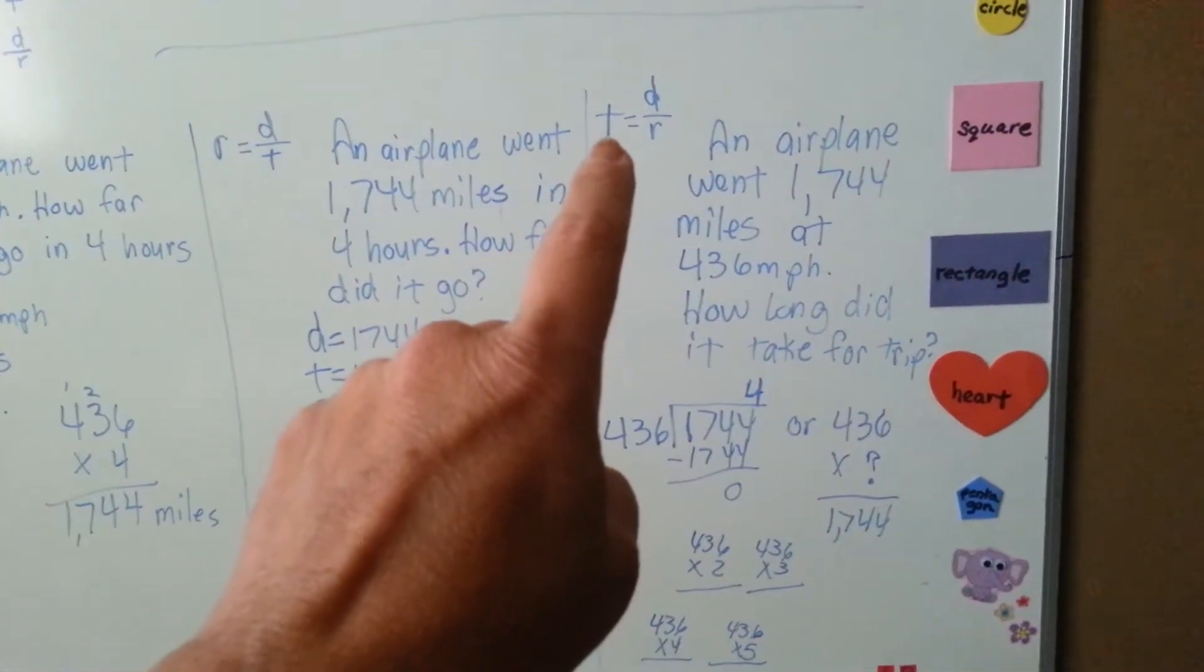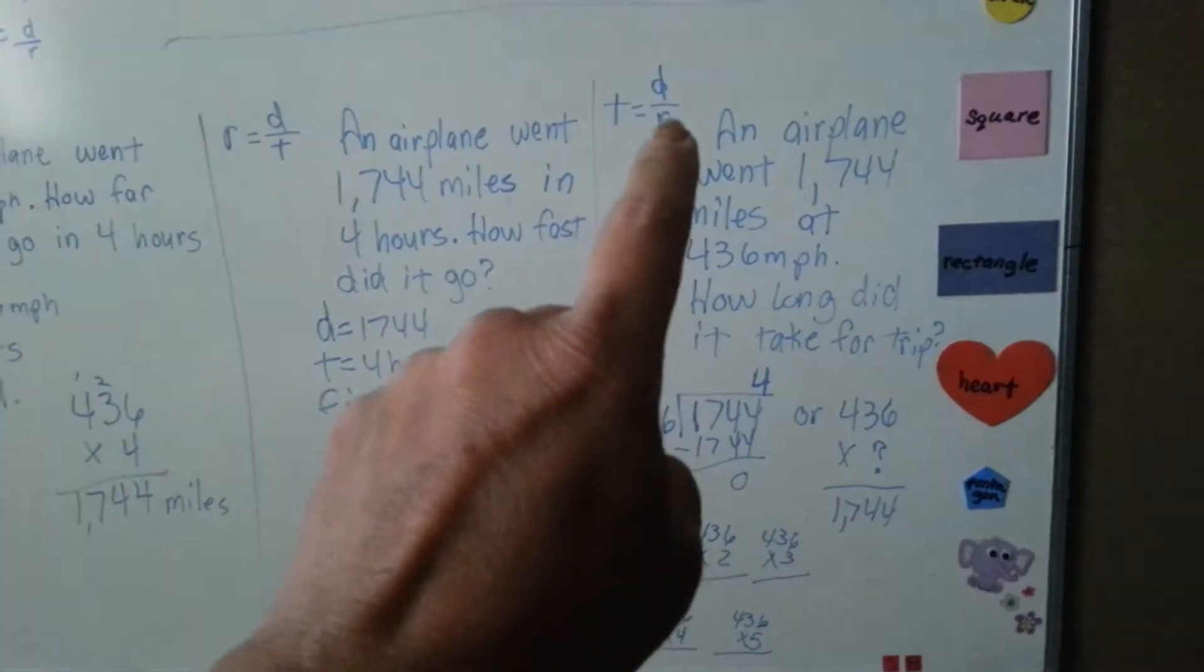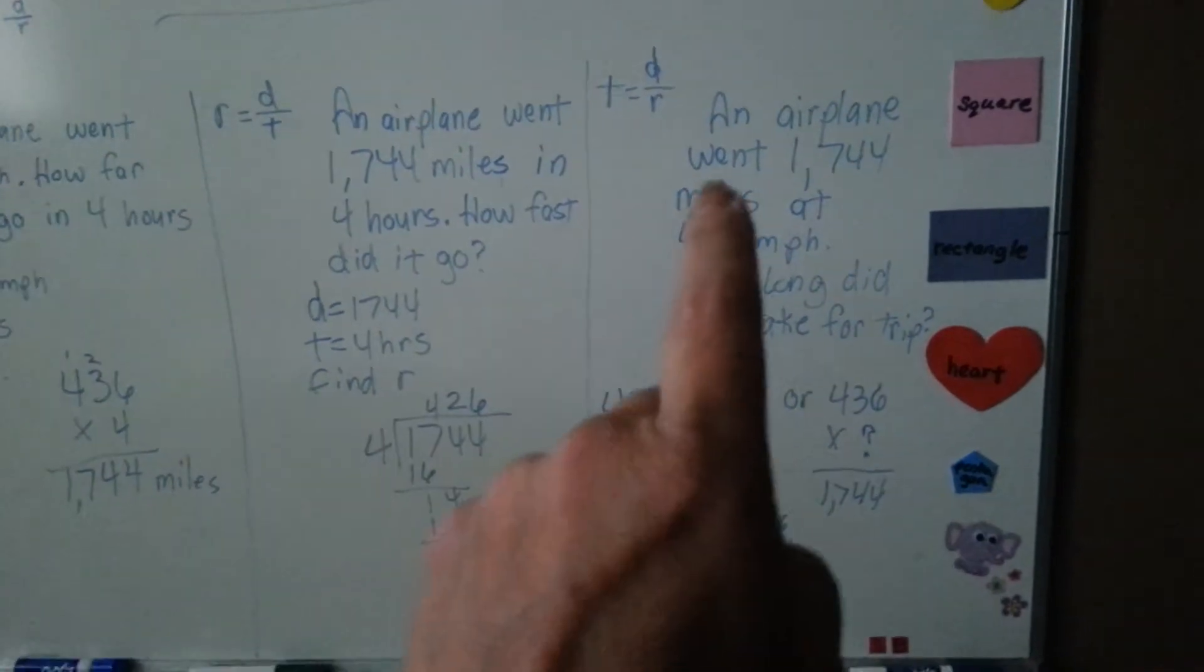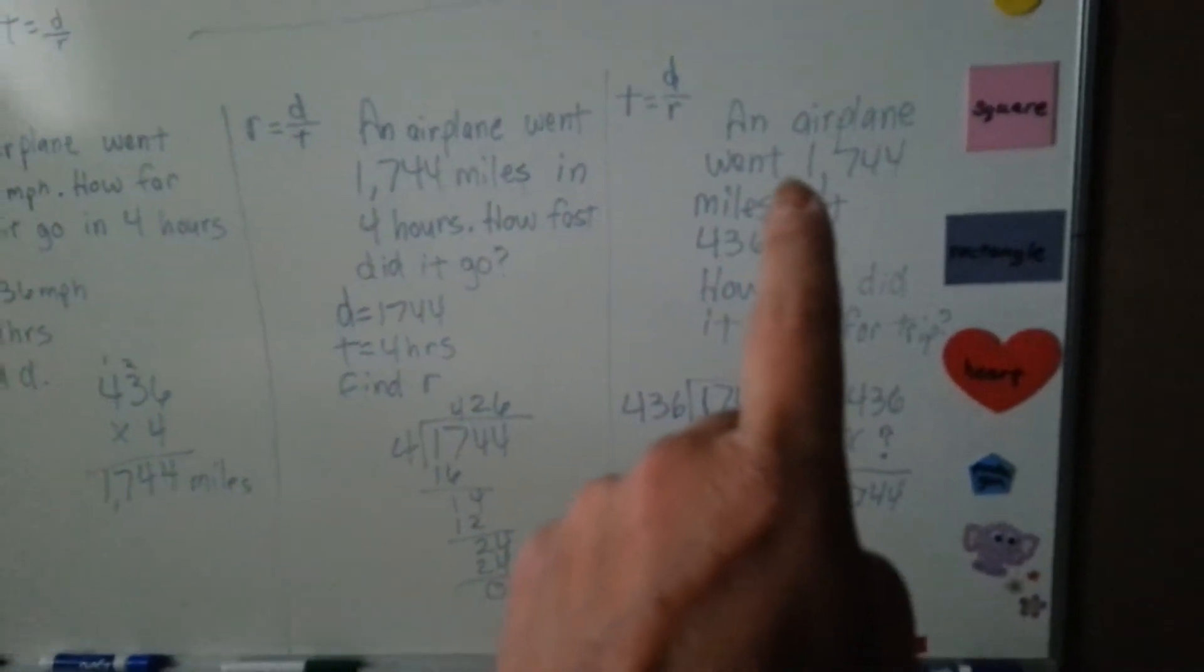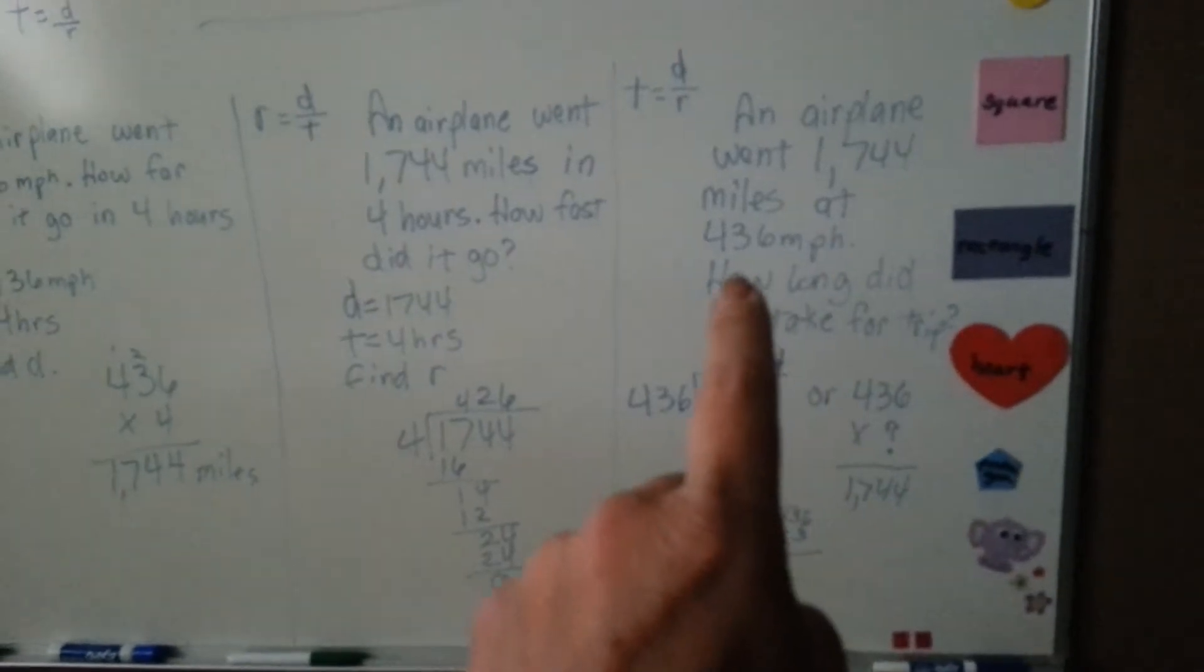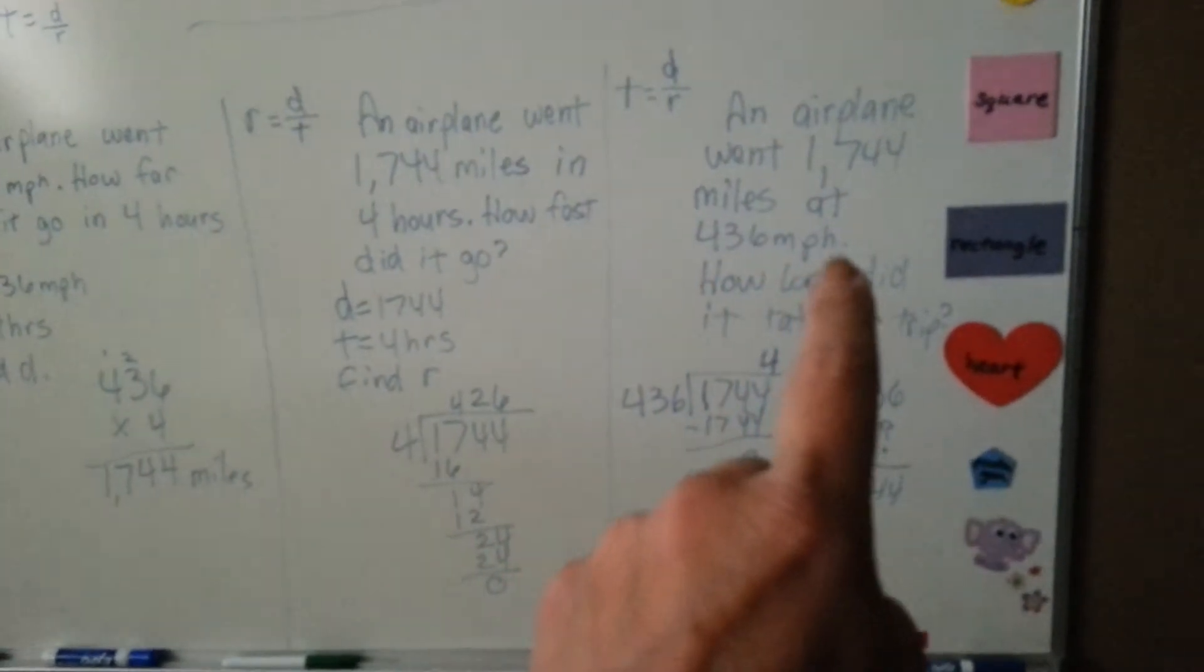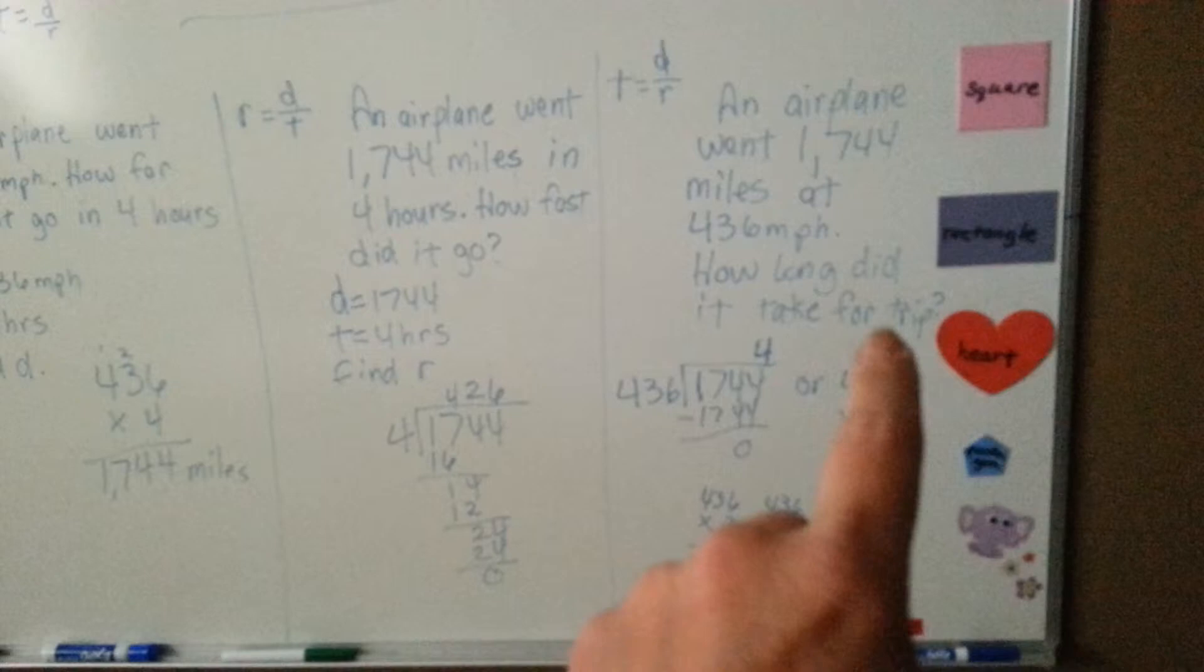If you're looking for the time, you would divide rate into the distance. So the word problem would say an airplane went 1744 miles at 436 miles per hour. How long did it take for the trip?